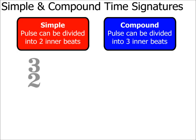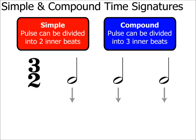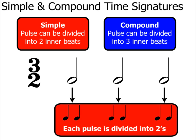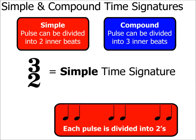Here's 3/2. We know that this means the beats are minims and that there are three of them in each bar. We split the pulse — a minim — into equal parts; it can be split into two crotchets. This time signature, along with 4/4, can also be referred to as simple.